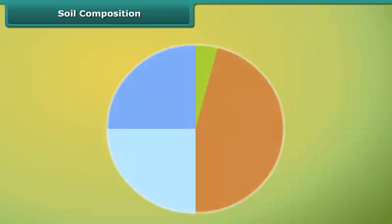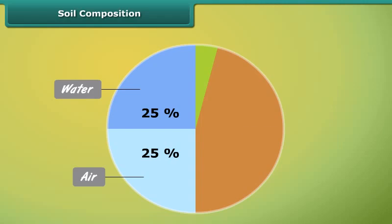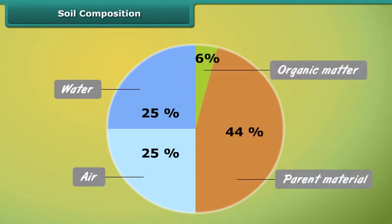Soil is a mixture of water, air, parent material, and organic matter. Over time, these four components combine together to form healthy, fertile soil.